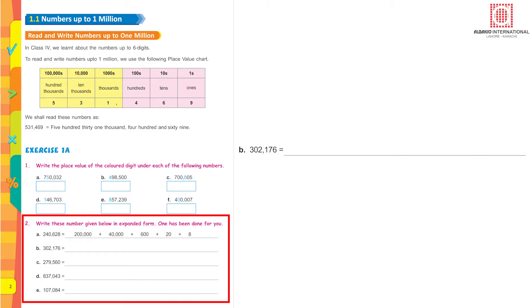302,176. Try to attempt them. 300,000 plus 2,000 plus 100 plus 70,000 plus 6. For part C it is 200,000 plus 70,000 plus 9,000 plus 500 plus 60 plus 0.